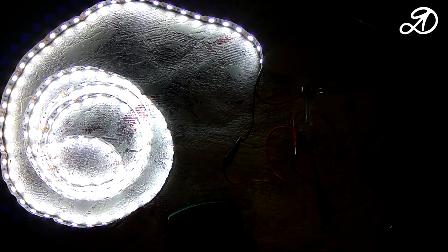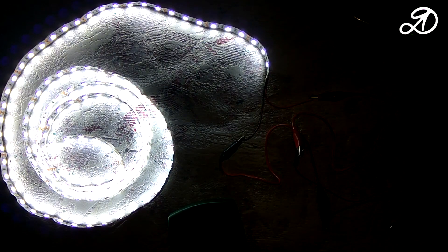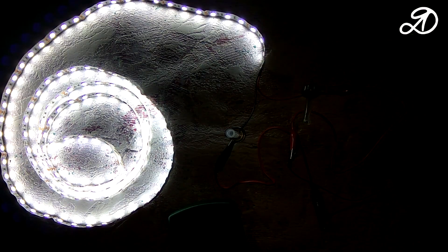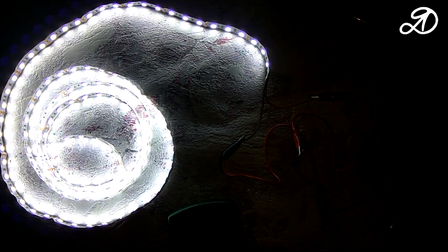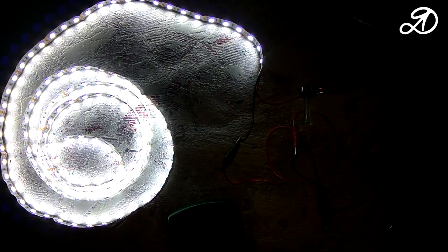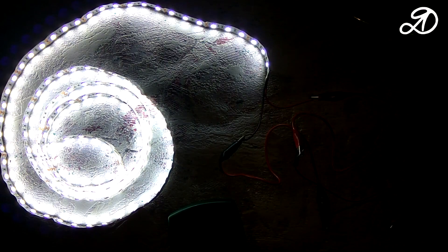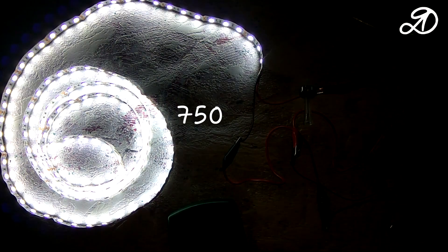Here you can see how the brightness changes depending on the number of bearings. Two bearings. One. Without bearings. Also I downloaded software on a smartphone which shows the level of illumination. The difference between each measurement is an average of 100 units.